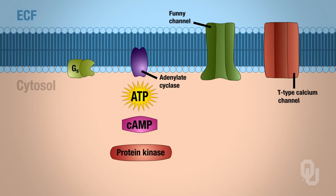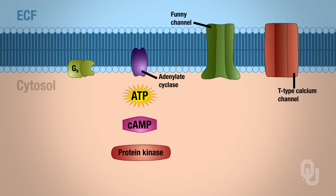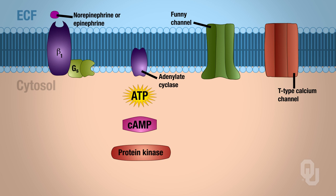Looking at the mechanism: this is the plasma membrane of the SA and AV nodes. The neurotransmitter or hormone — norepinephrine or epinephrine — binds to the beta-1 receptor, activating a G protein. The G protein slides over and activates adenylate cyclase, the amplifier enzyme for the cyclic AMP second messenger system. ATP is converted to cyclic AMP, which then activates protein kinase. Protein kinase always phosphorylates.